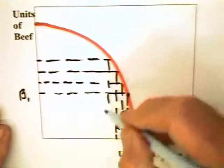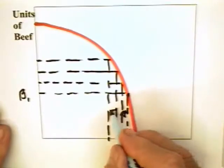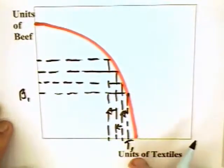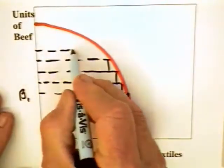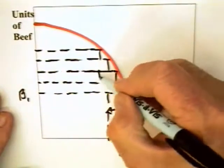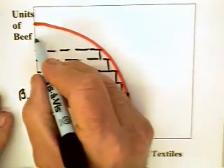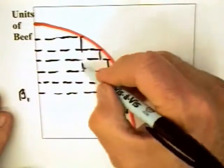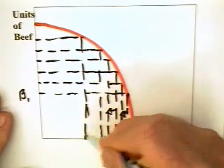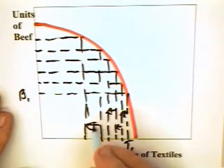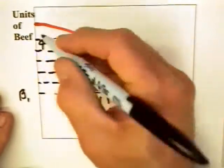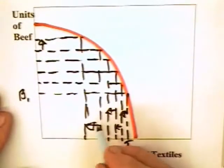And as we move up this curve, the amount of textiles that's going to be given up to produce each additional unit of beef begins to expand until we get up here. And the cost of producing an additional unit of beef, to produce that unit of beef, we have to give up this much in the way.